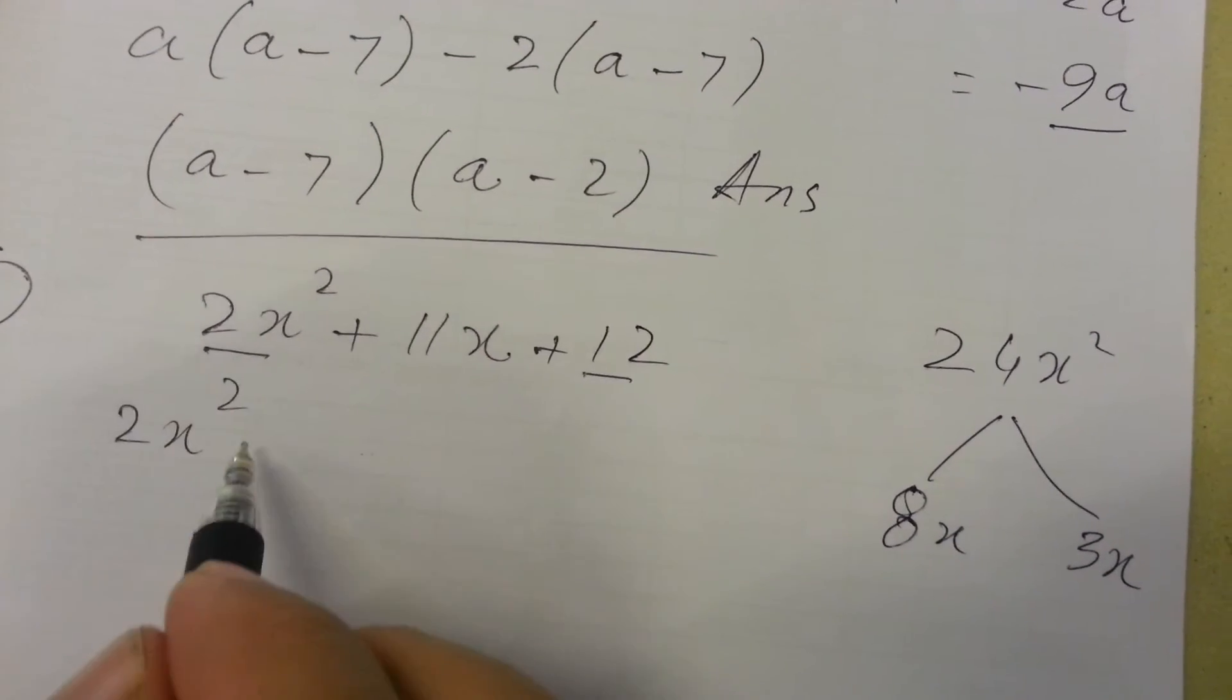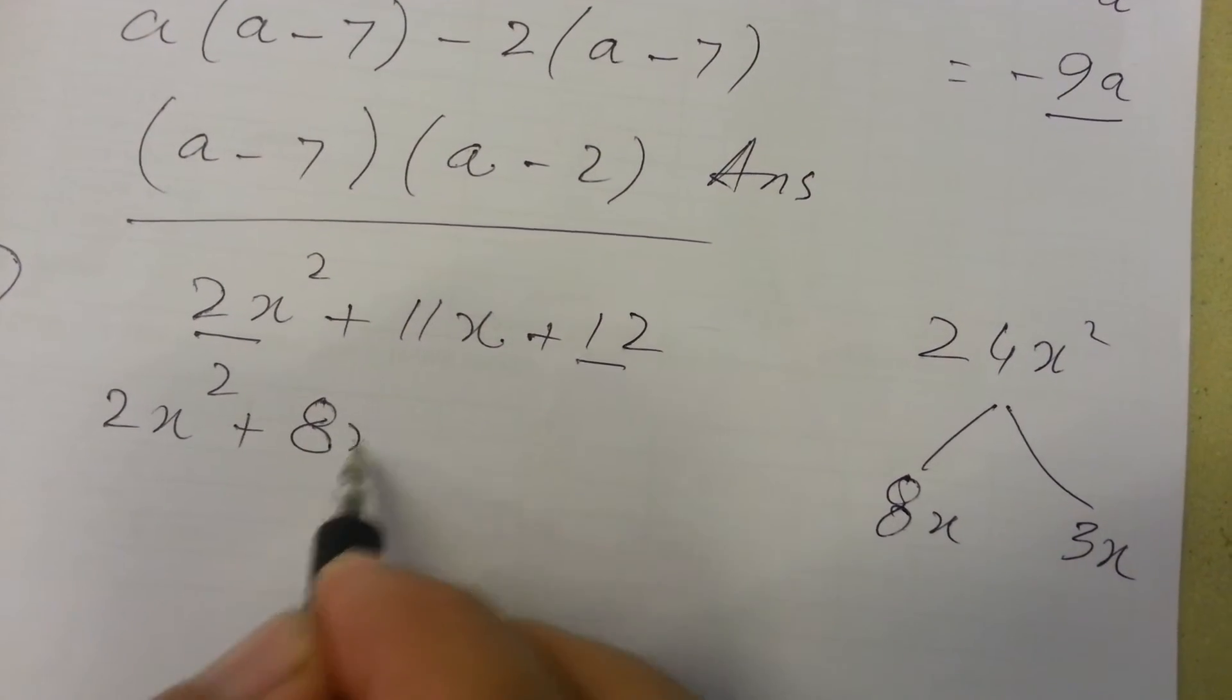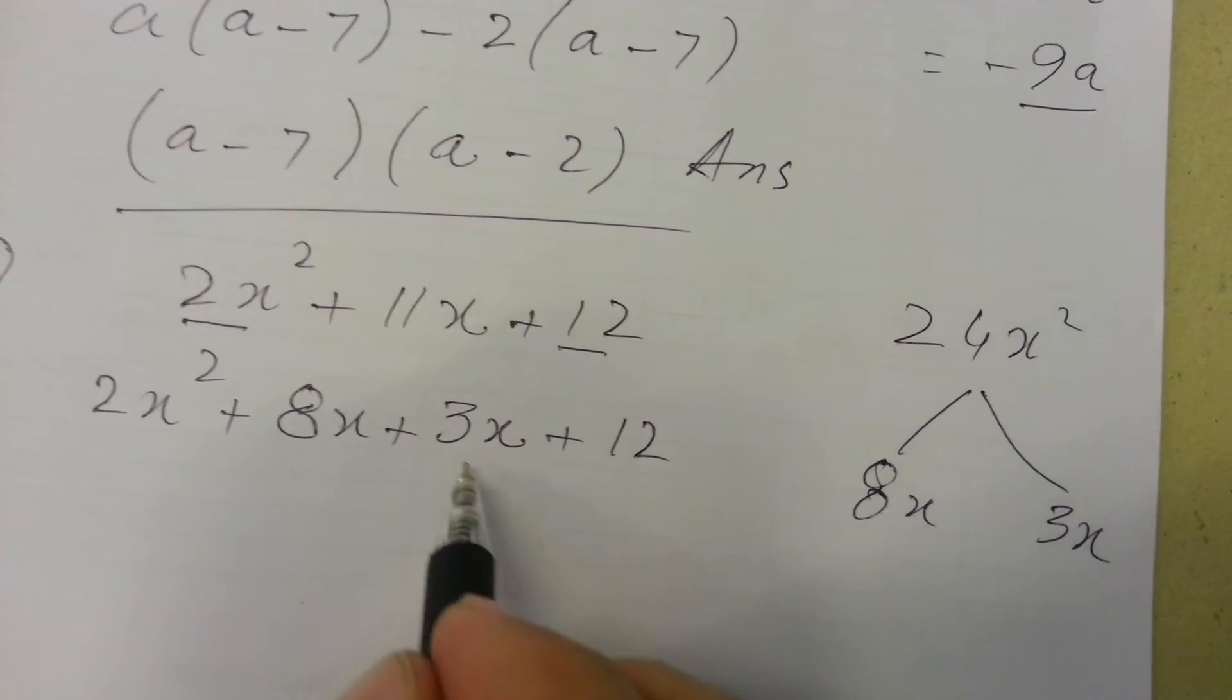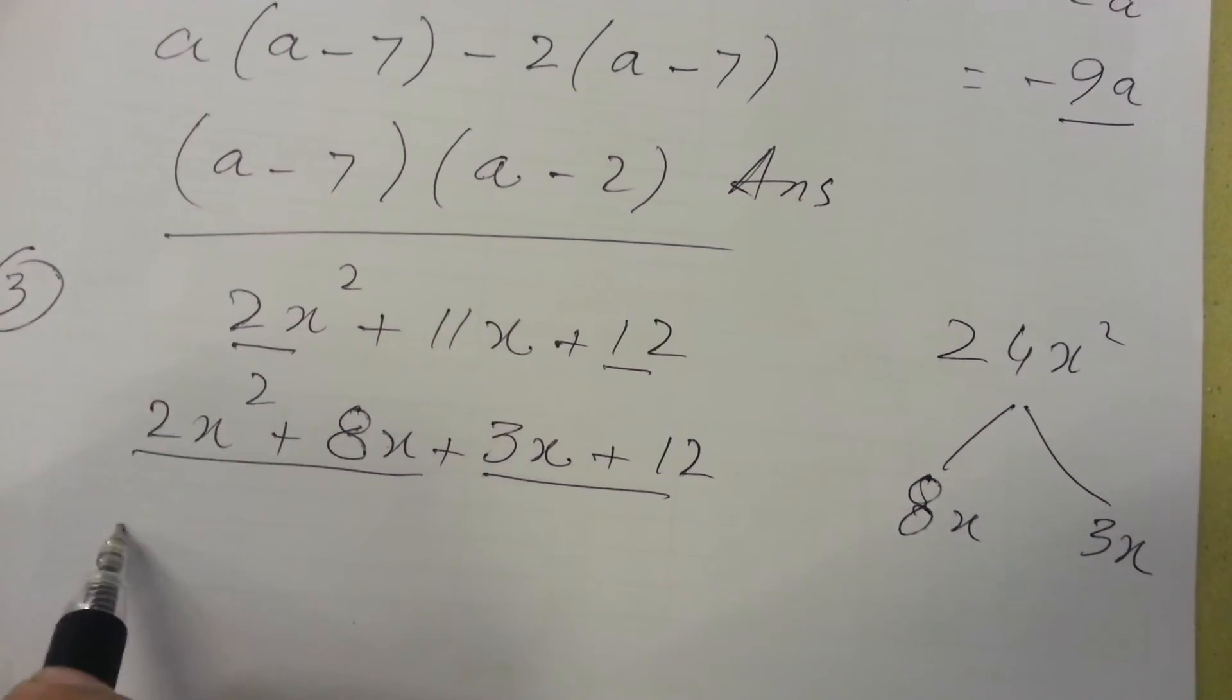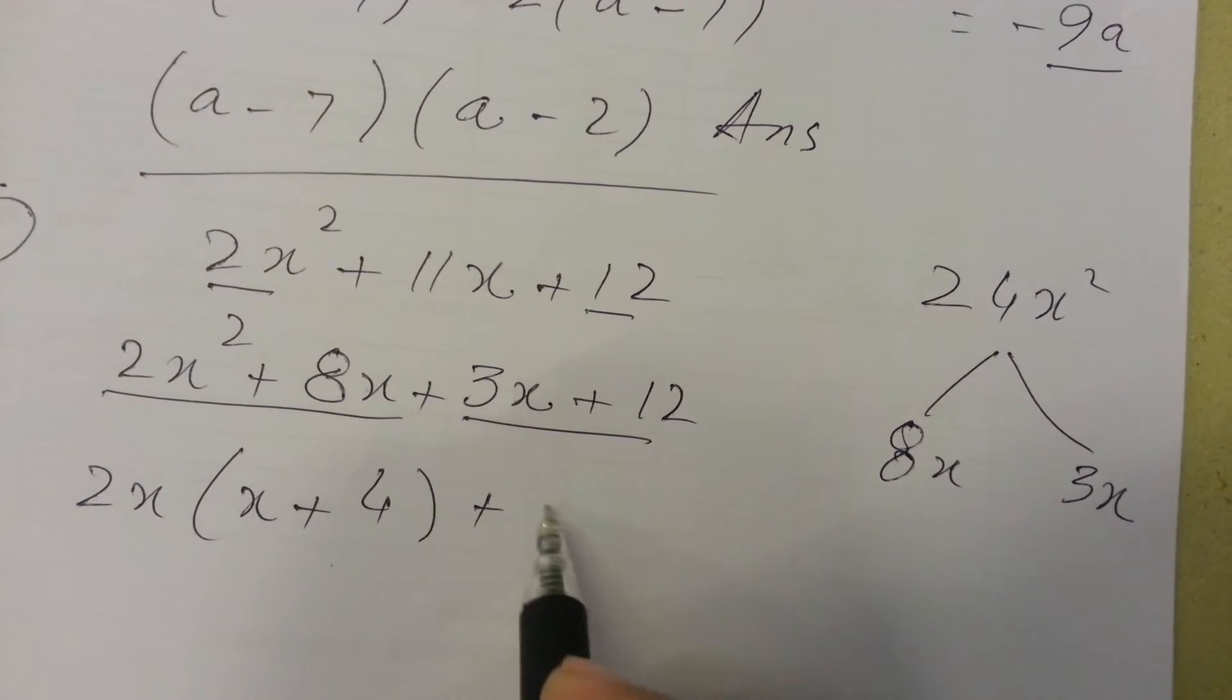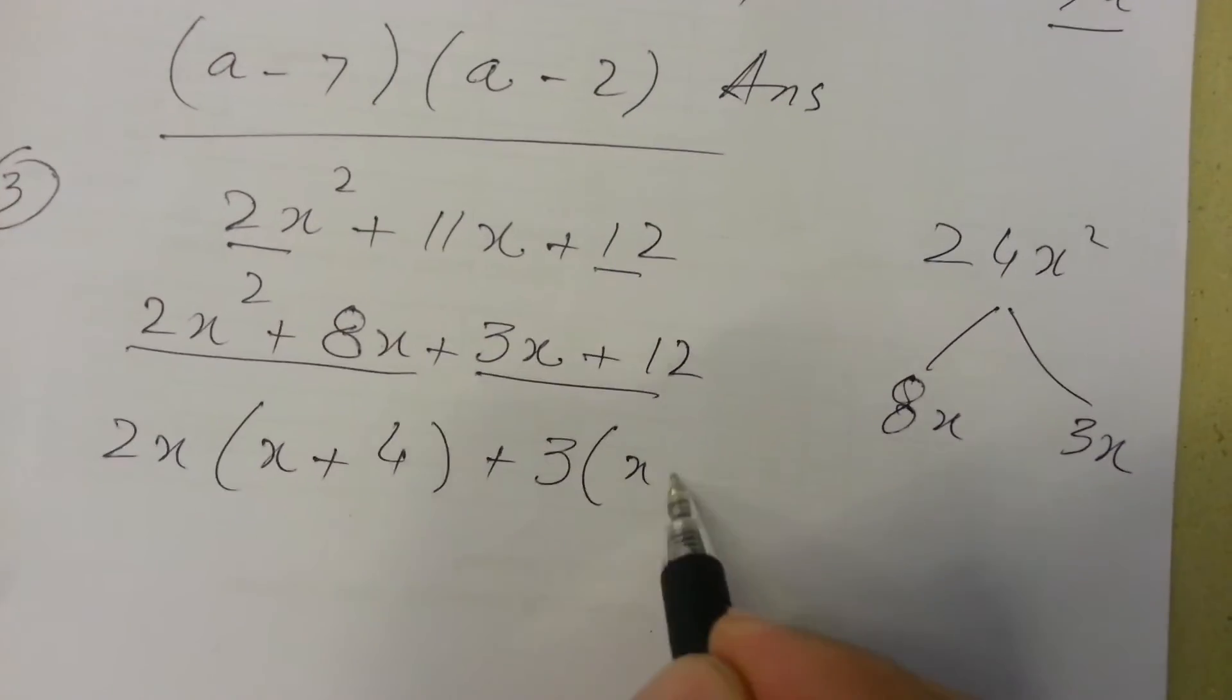Here will be 2x squared plus 8x plus 3x plus 12. Now taking common 2x as a common, it will be x plus 4 and by taking common 3, x plus 4.